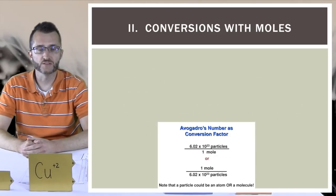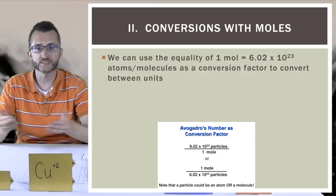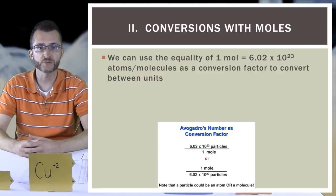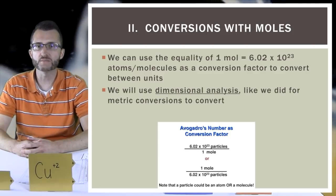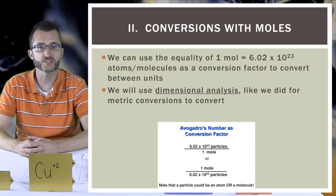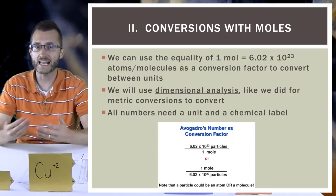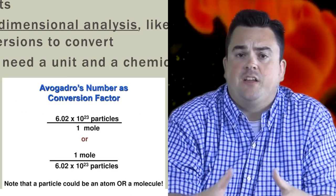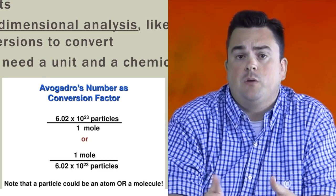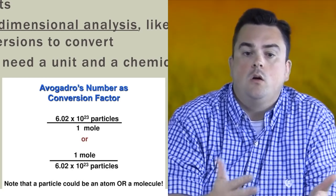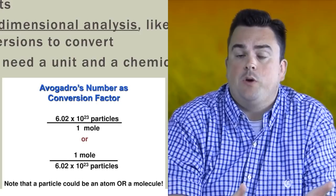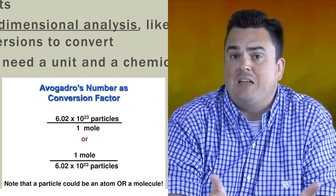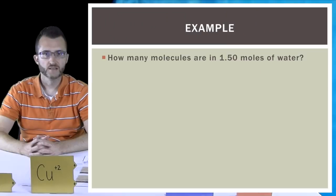Conversions with moles. We can use the equality of 1 mole equals 6.02 times 10 to the 23rd atoms or molecules as a conversion factor to convert between units. We will use dimensional analysis like we did for metric conversions. All numbers need a unit and a chemical label. Avogadro's number as a conversion factor can be either 6.02 times 10 to the 23rd particles over 1 mole, or 1 mole over 6.02 times 10 to the 23rd particles. Particles just mean small pieces — so it could mean atoms or molecules.